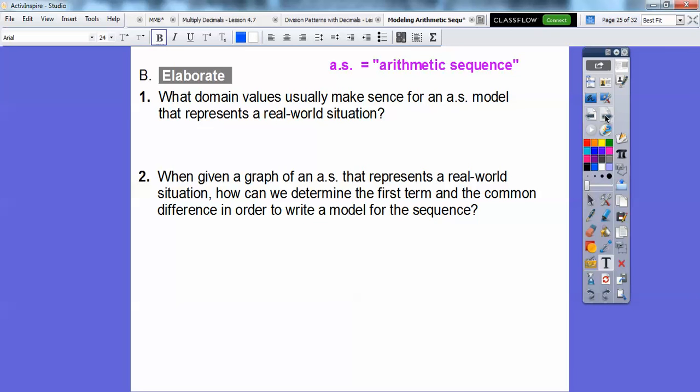What domain values usually make sense for an arithmetic sequence model that represents real world situations? Well, the domain values are those inputs, and we always start with one, then two, then three. The domain is a set of our term numbers, or our position numbers, our first position, our second position. That last one, we wanted to find the fifth position. So those domain values are always positive whole numbers, one, two, three, four, as many as we need to get up to.